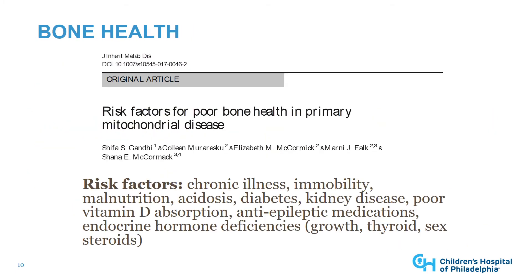Bone health is an important consideration in individuals with primary mitochondrial disorders. A paper by our trainee Shifa Gandhi examined a cohort of individuals at CHOP with mitochondrial disorders and found multiple risk factors for fragile bones. These included the chronic illness itself, immobility, malnutrition, acidosis, diabetes and kidney disease, GI problems contributing to poor vitamin D absorption, anti-epileptic medications affecting vitamin D metabolism, as well as endocrine hormone deficiencies including growth hormone, thyroid, and sex steroid deficiencies.